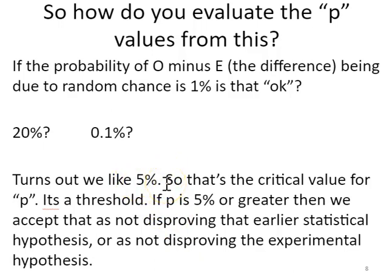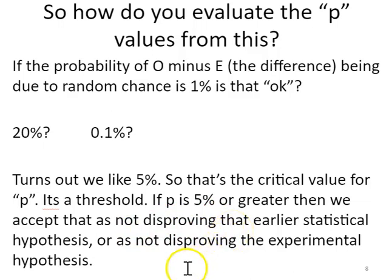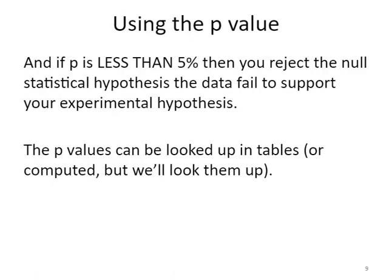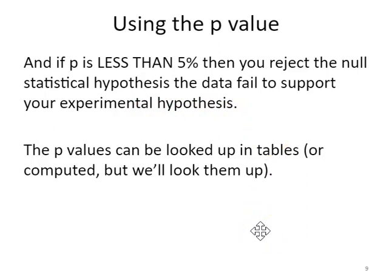It turns out that we like the number five percent in science, and this has been validated — it's not just a random number chosen out of a hat. A lot of statisticians have done a lot of work on that number, so there's good data to support the use of five percent as a critical value or threshold for the p-values in chi-square goodness of fit tests. If we see a p-value that is five percent or greater, we accept that as not disproving the statistical null hypothesis — that the difference between observed and expected is due to chance alone — and therefore not disproving the experimental hypothesis. If the p-value is less than five percent, we reject the null statistical hypothesis and say the data failed to support our experimental hypothesis. In other words, we should question the data and the first thing you would do is repeat the experiments, ideally with a larger sample size.